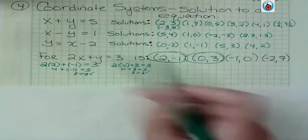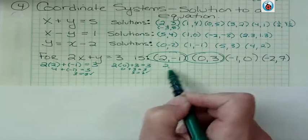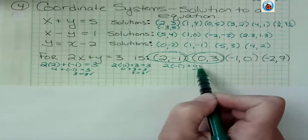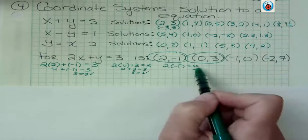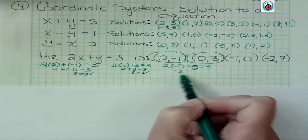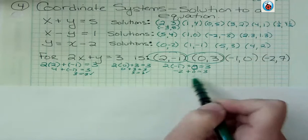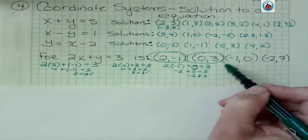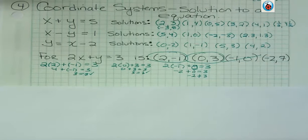Okay, the next one. 2 times negative 1 plus y, oh, y we know is 0, plus 0 equals 3. 2 times negative 1 is negative 2, plus 0 equals 3. Negative 2 does not equal 3. This one is not a solution. This one is not a solution.